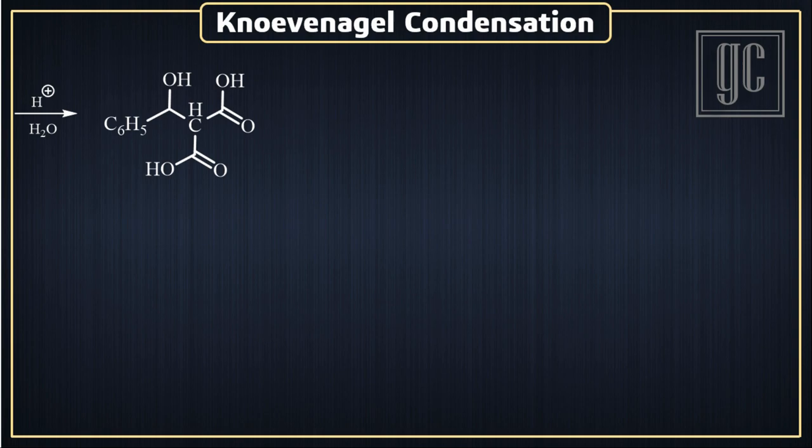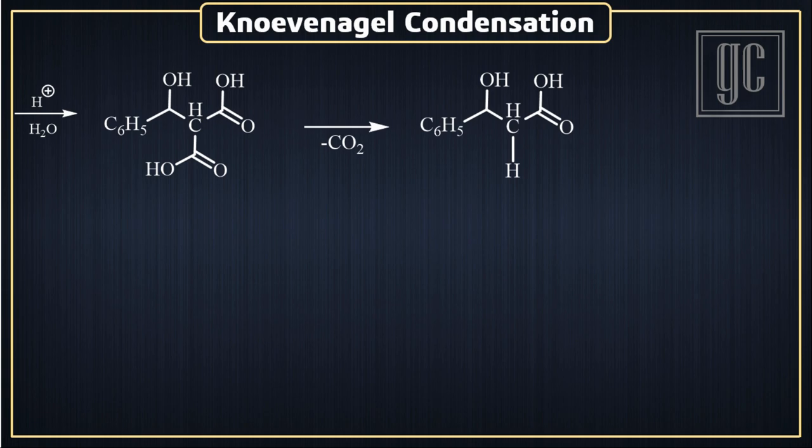The diacids on the same carbon have the tendency to undergo an alpha-elimination reaction, and because of that, one acid group is removed as carbon dioxide. A beta-hydroxy acid forms as the product.